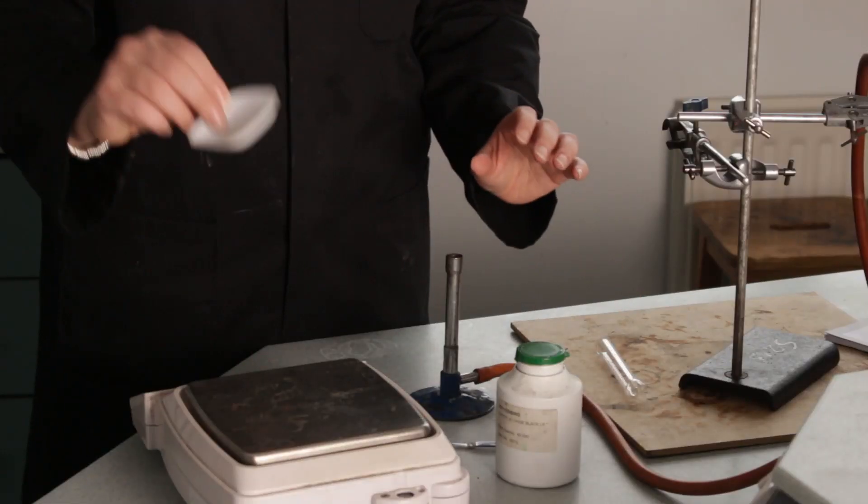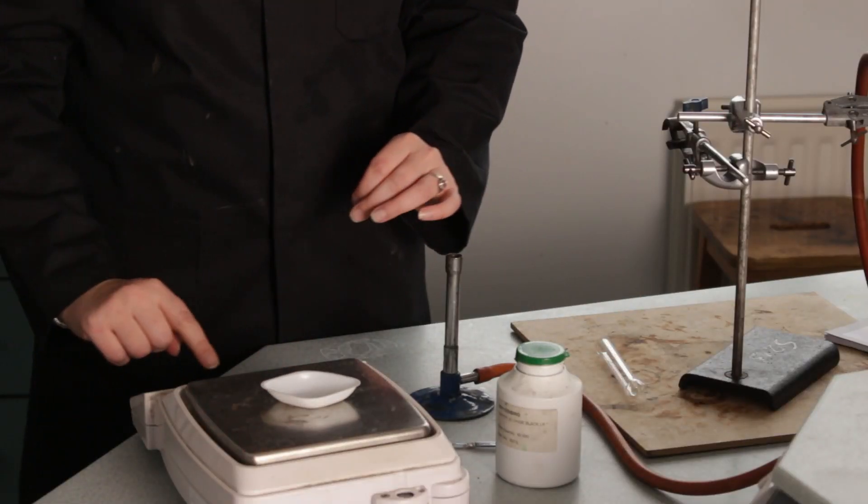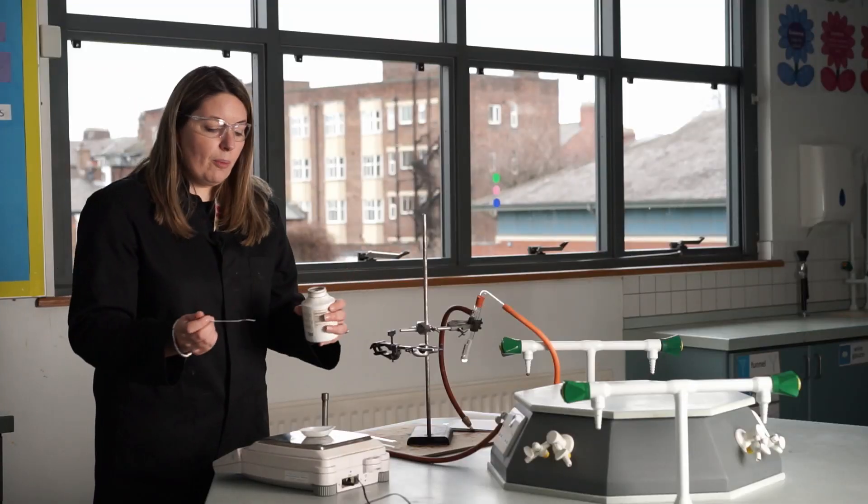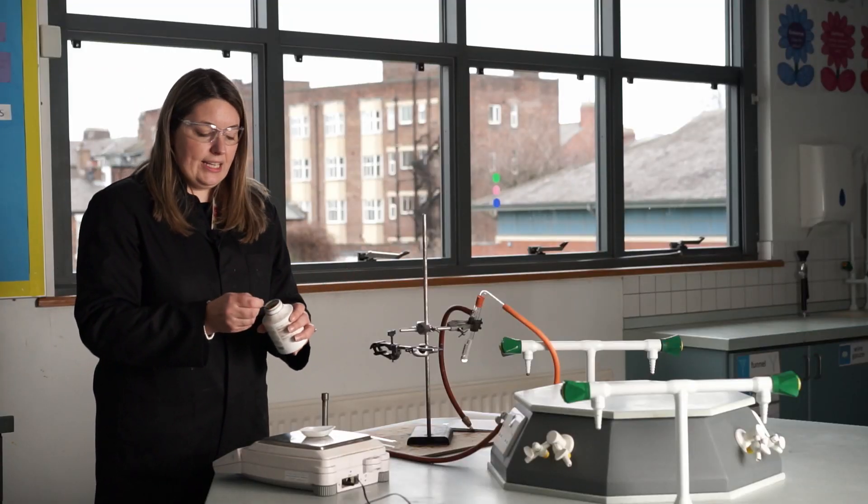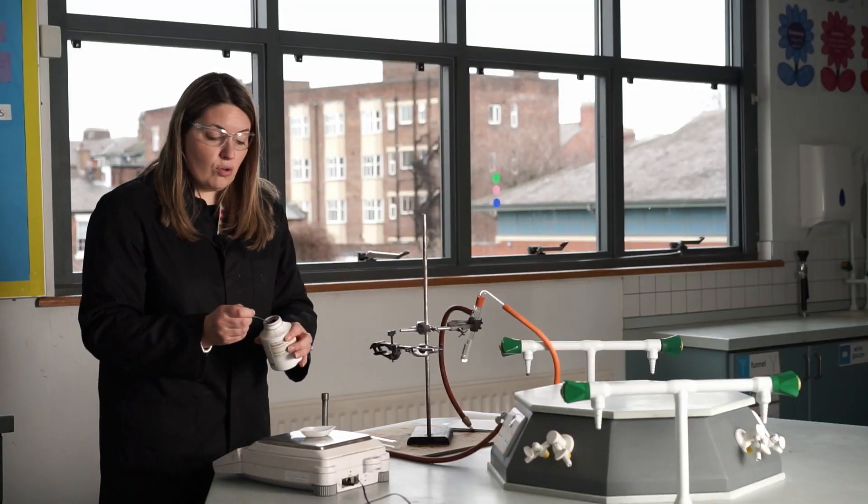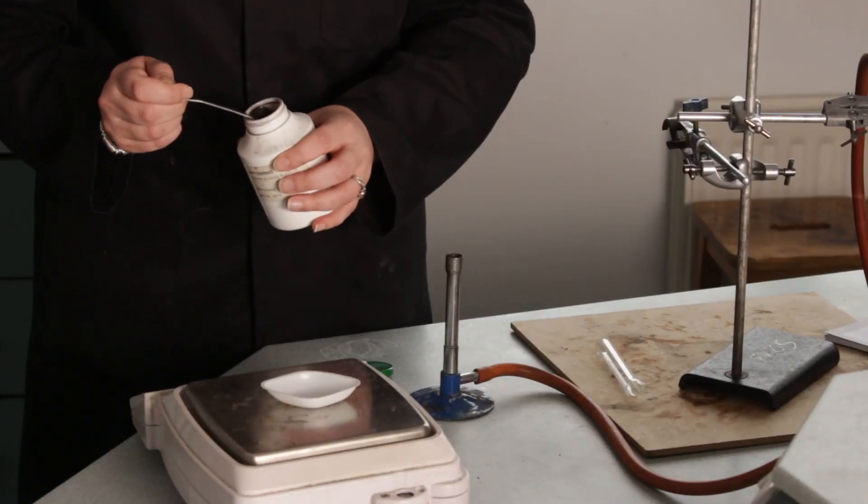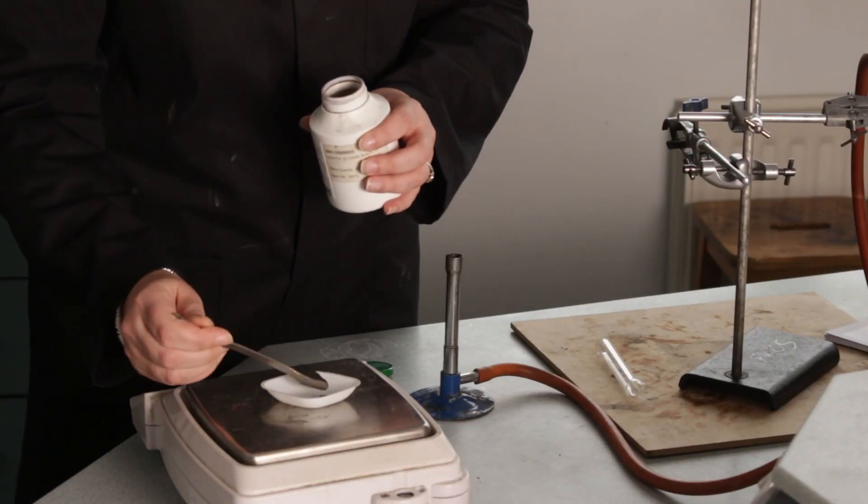I'm going to put that to one side. I'm then going to take a weighing boat, zero my balance, take some copper oxide, which is a black solid, and we're going to weigh out two grams. So I've got a weighing boat on a balance and I'm going to weigh out two grams.